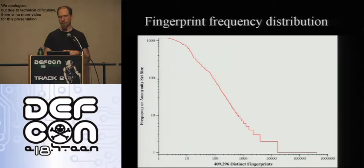If you drew this graph of how common the different fingerprints were without log axes, you end up with a graph where the line runs exactly along one axis all the way and then exactly along the other. So in order to see any structure, you have to put it on log scales. But the important thing to know is that 84% of the data is right down here in the tail.